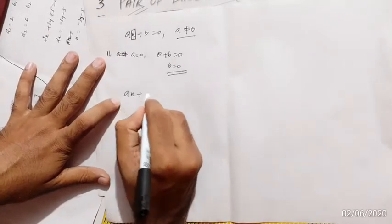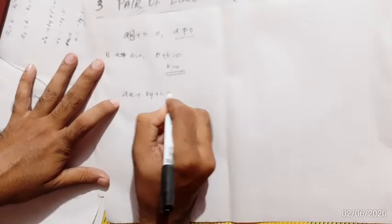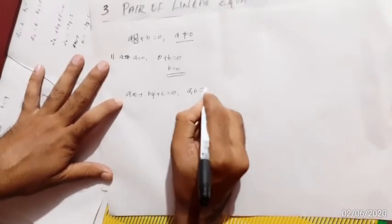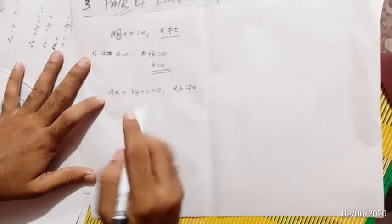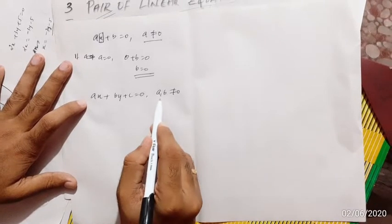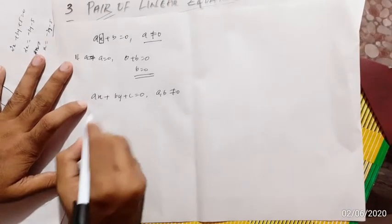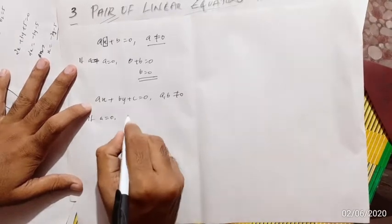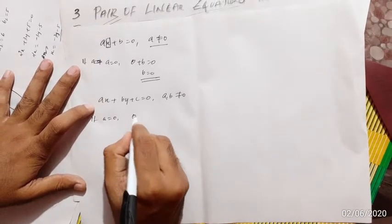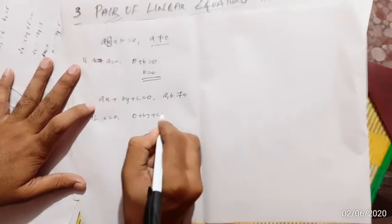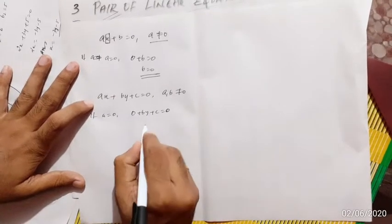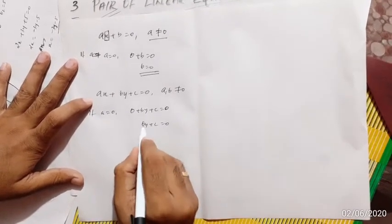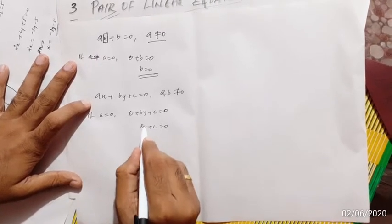The general form of a linear equation in two variables is ax + by + c = 0, where a and b are not both equal to zero. If a = 0, then we get 0 + by + c = 0, which is by + c = 0 — a linear equation in only one variable, y.